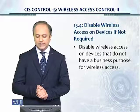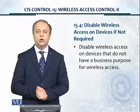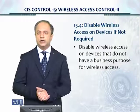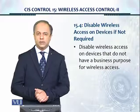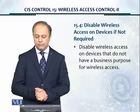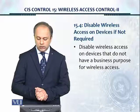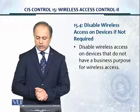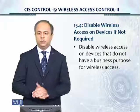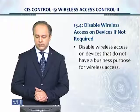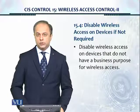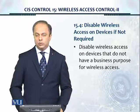Control number 15.4: disable wireless access on devices if not required. For example, servers in the data center do not require any wireless access. Critical systems which have critical information should have wireless access disabled. Disable wireless access on devices that do not have a business purpose for wireless access — it could even be a printer or computer. By default, wireless access should be disabled if there is no business purpose for that device to connect to a wireless network.